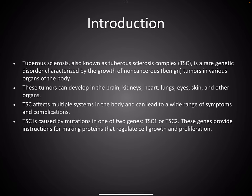Tuberous Sclerosis, also known as Tuberous Sclerosis Complex TSC, is a related genetic disorder characterized by growth of non-cancerous tumors in various organs of the body involving brain, kidney, heart, lungs, eyes, skin and other organs. It affects multiple systems and provides a wide range of symptoms and complications.